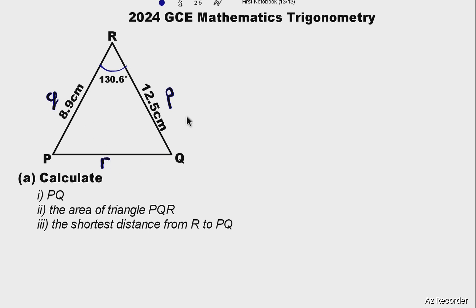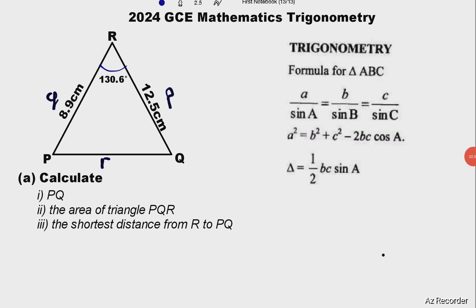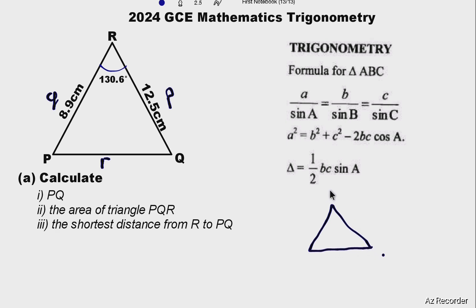Now let us look at the formulas given for this type of question under trigonometry. For ECZ standard, three formulas are given. These formulas were developed for a triangle ABC, where the sides opposite angles A, B, and C are labeled small letters a, b, and c respectively.